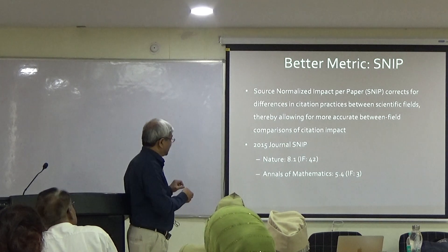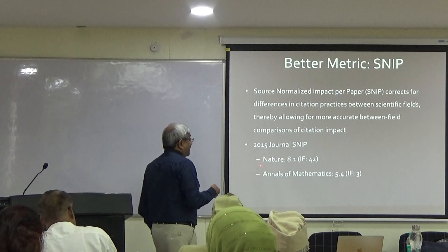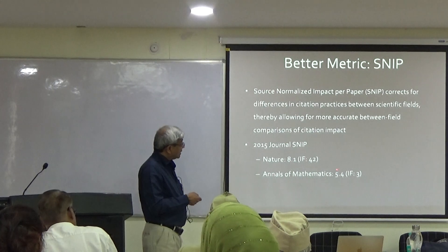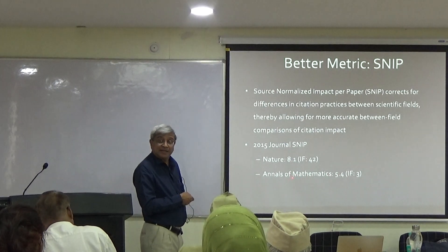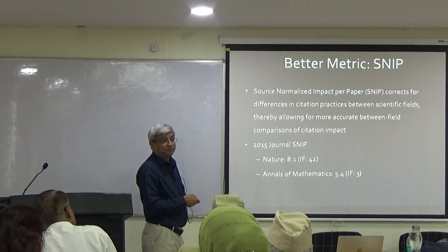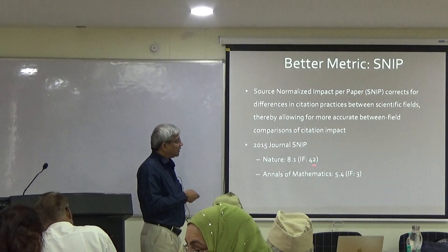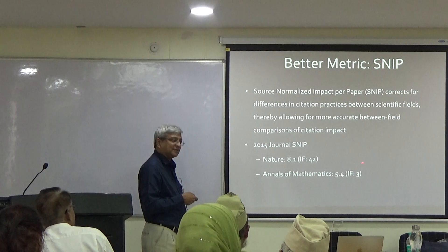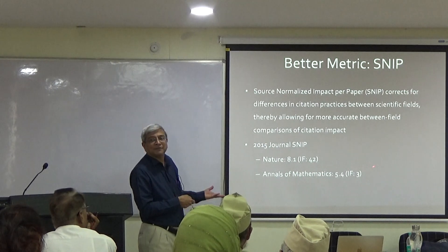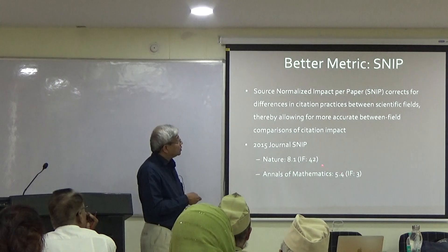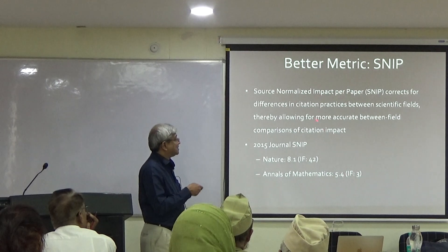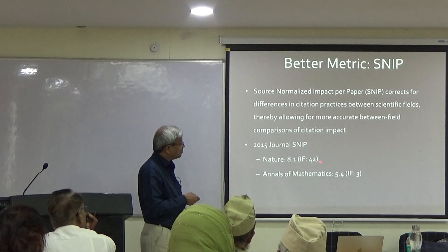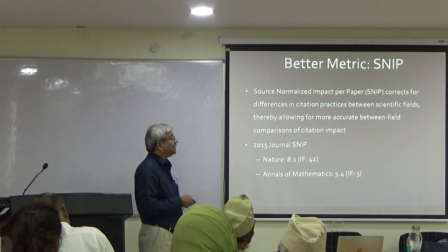Here is a nice example. Nature, if you just look at impact factor, its impact factor is 42. And the Annals of Mathematics, which is the top mathematics journal, has an impact factor of only 3. A mathematician may be getting a Fields Medal because of work published there, but it will only carry an impact factor of 3. However, if you use the source normalized impact, Nature comes down to 8.1 from 42, and Annals goes up from 3 to 5.4.